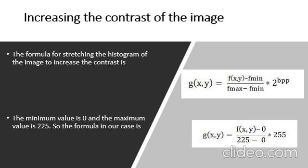The formula requires finding the minimum and maximum pixel intensity multiplied by levels of gray. In our case, the image is 8 bits per pixel. Levels of gray are 256. The minimum value is 0 and the maximum value is 225.